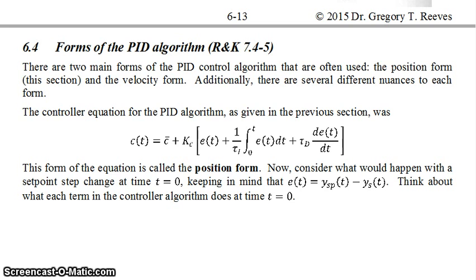In this screencast, we're going to look at the PID controller algorithm. There are two different main forms of the PID controller algorithm that are often used: one is called the position form, and the other one is called the velocity form. Additionally, there are several different nuances to each form.